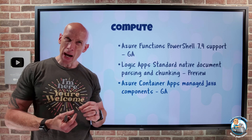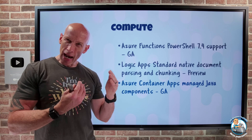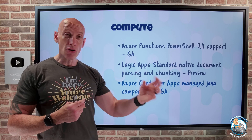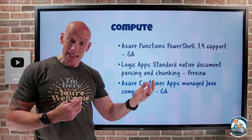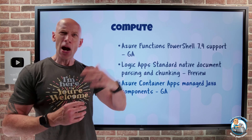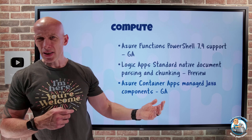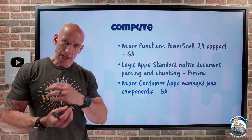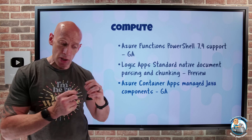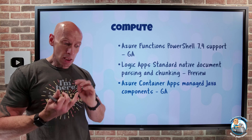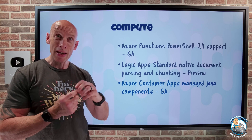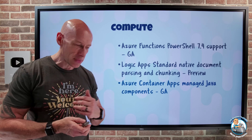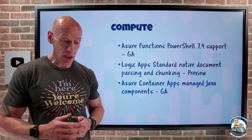Azure Container Apps — which is the abstracted Azure Kubernetes service where I don't have to worry about AKS — adds things like DAPR for better microservice capabilities, KEDA for better scaling, and networking capabilities from networking sidecars. It now also has a bunch of managed Java components: Spring Cloud Service Registry so I can find different services, Spring Cloud Config Server to externally manage application configurations, and Spring Boot Admin for metrics and various types of dumps. That is now all available in Azure Container Apps.